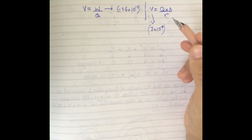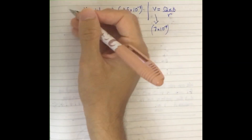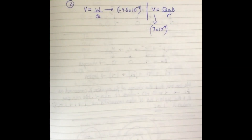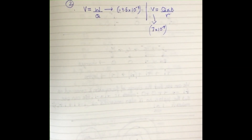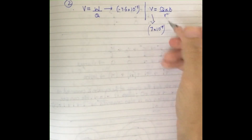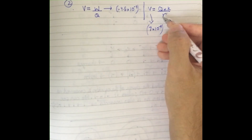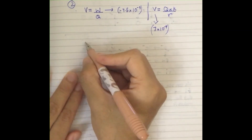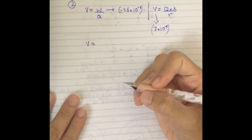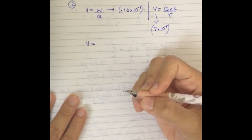There are two ways to do this. I'm going to do the first method in this question and the second method in another video. So let's find the electric potential first using V = kQ/r.